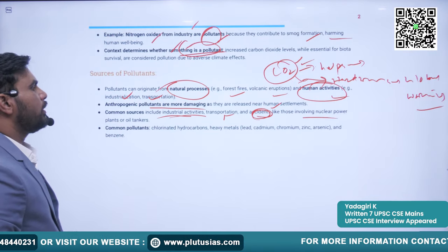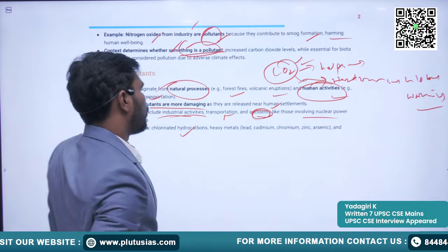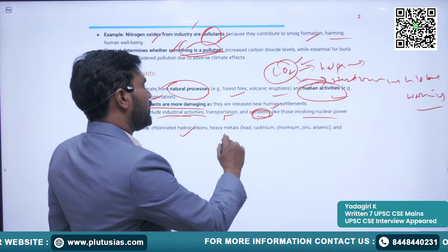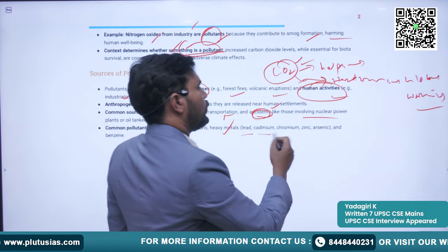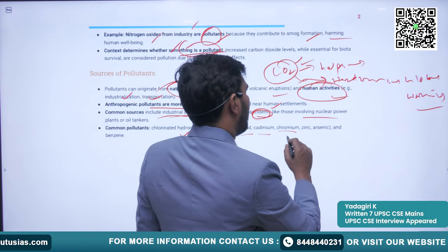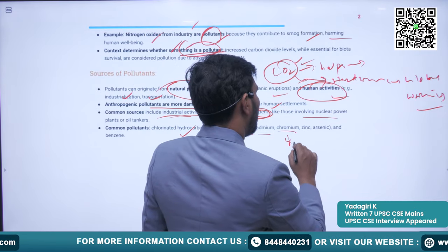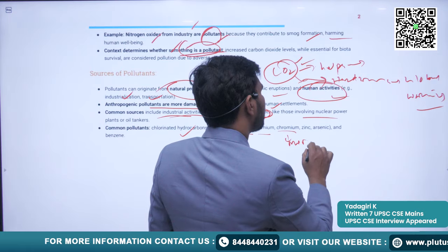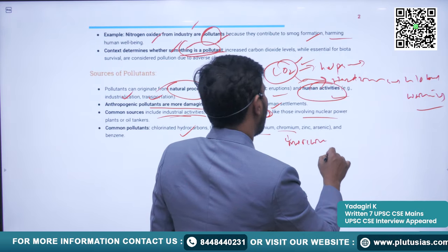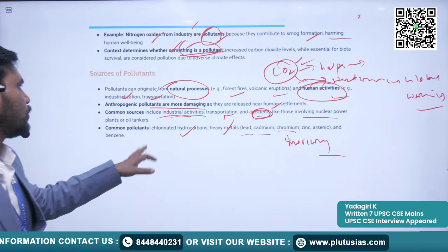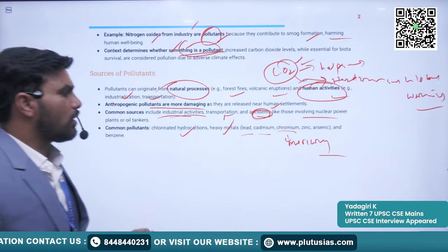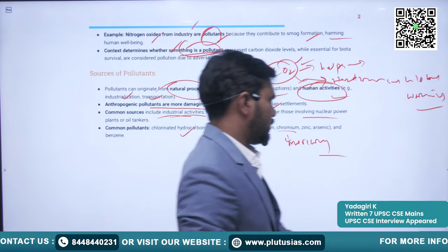Common pollutants include chlorinated hydrocarbons, heavy metals such as lead, cadmium, chromium, and mercury, as well as benzene.